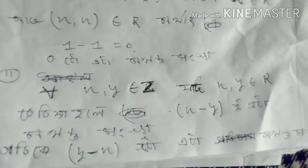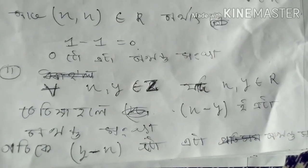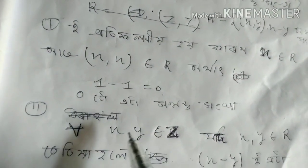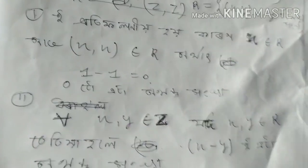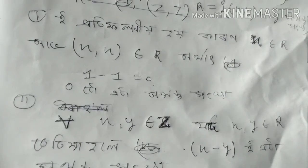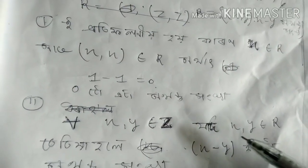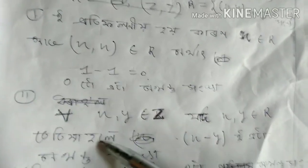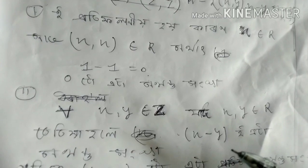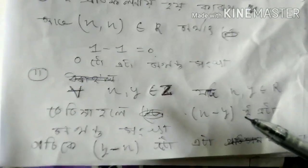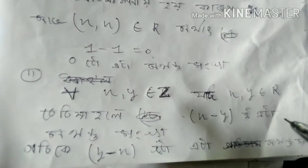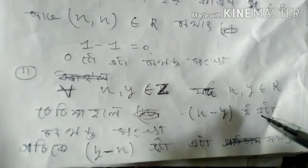So x minus y is equal to 0. I will write x, y belongs to z. So x, y belongs to z.